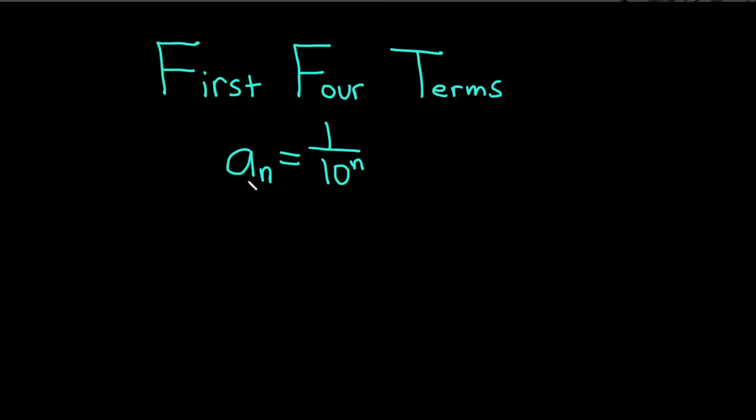Hi, in this video we're going to do an example of finding the first four terms of a sequence. So our example is the sequence a sub n equals one over ten to the n.